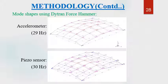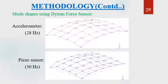The mode shapes obtained using Dytran force hammer as excitation show that mode shapes from the accelerometer are in good shape; however, there are small deviations at some points using piezo sensors. The natural frequency came out to be 29 Hz for Dytran force hammer with accelerometer whereas it came out to be 30 Hz for piezo sensors. Using Dytran force sensor, mode shapes from both accelerometer and piezo sensors are in good shape, with natural frequency at 28 Hz for accelerometer and 30 Hz for piezo sensors.